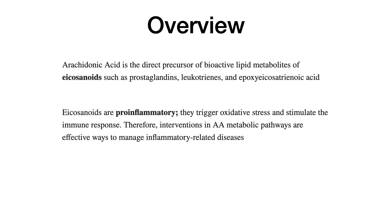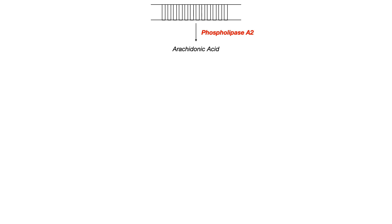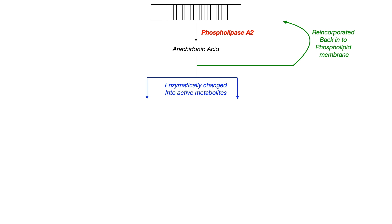So let's go through the pathway. The first thing that happens is from the membrane, phospholipase A2 promotes the release of arachidonic acid. Arachidonic acid can take one of essentially two pathways. One, it can be reincorporated back into the phospholipid membrane — essentially recycled. Or two, as shown in the blue pathway, it can be enzymatically changed into various different downstream active metabolites, and that blue part is what this video is going to focus on today.